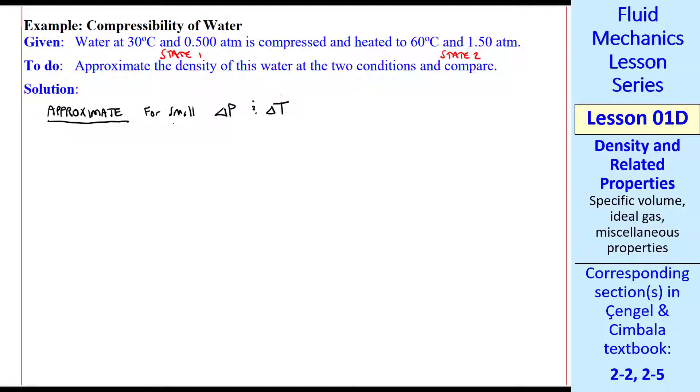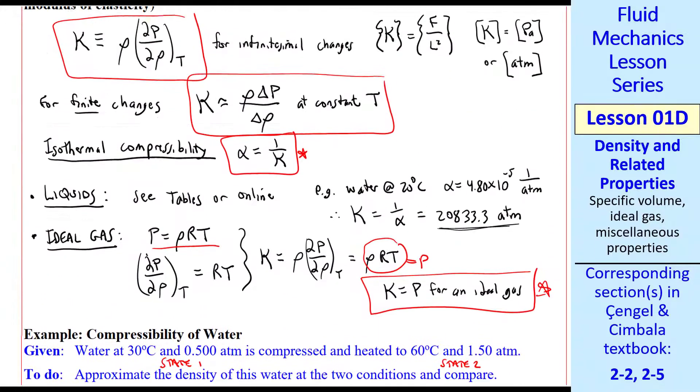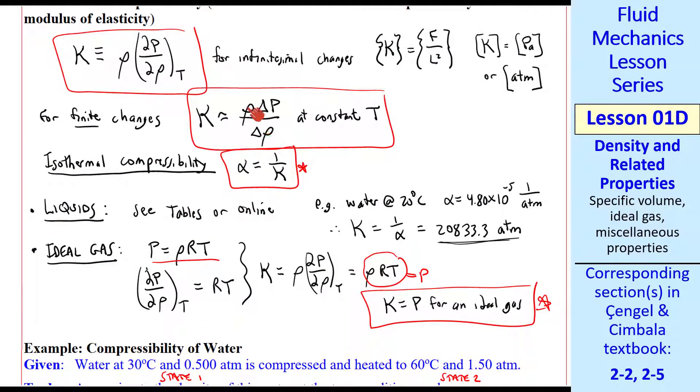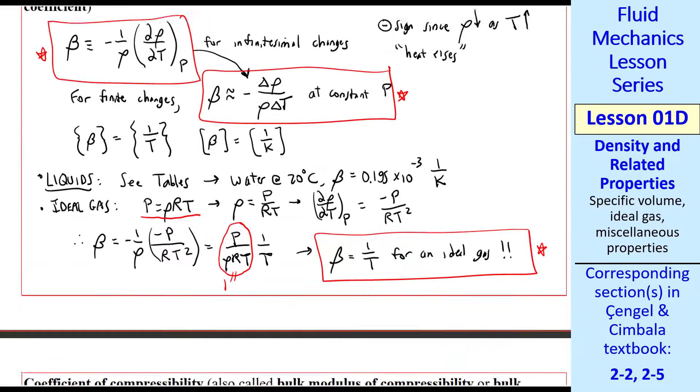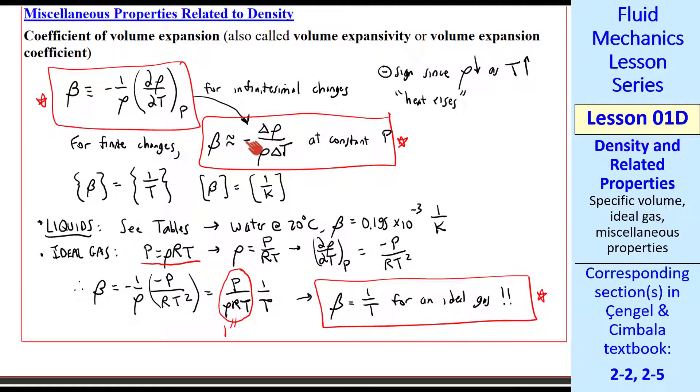Let's approximate the density of this water at the two conditions and compare. We will approximate for small delta p and delta T by combining delta rho from both of the above. So delta rho is approximately, let me scroll up,